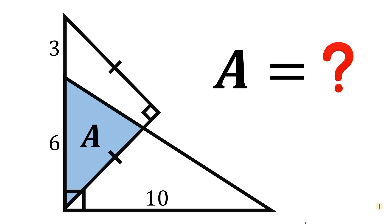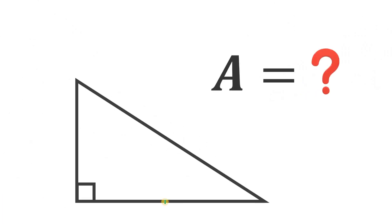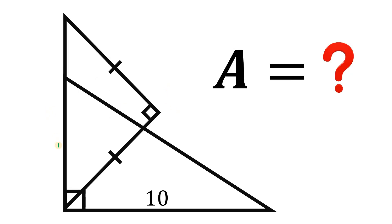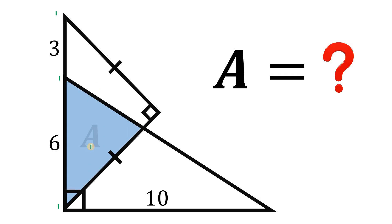Can you solve this geometry challenge? Here's the question: given a right triangle with base 10 units, draw an isosceles right triangle. This segment right here is 6 units, and on the top this segment measures 3 units. Now let's color the overlapping region and call it A.